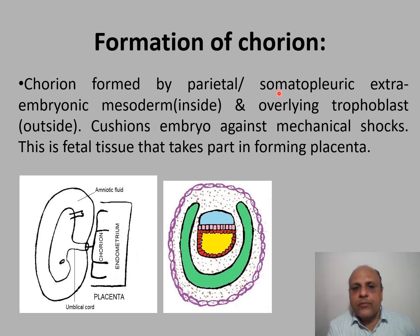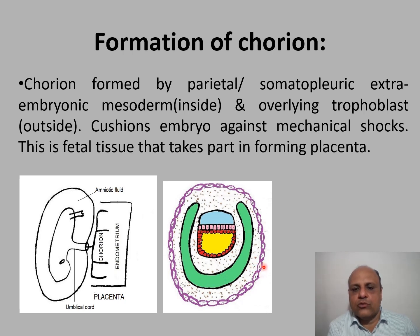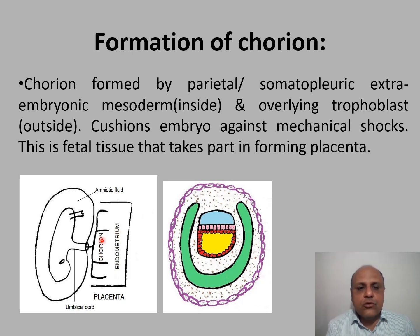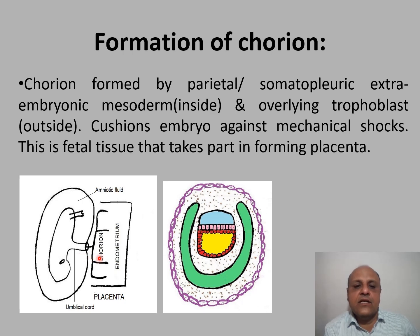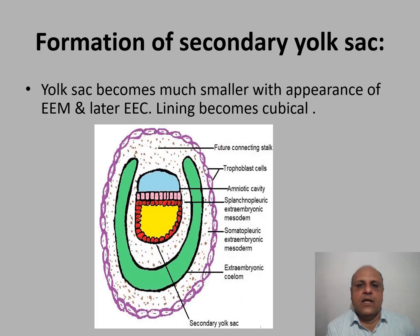The chorion is formed from the somatopleuric extra-embryonic mesoderm on the inside and the overlying trophoblast cells on the outside. The chorion cushions the embryo against mechanical shocks and is the fetal tissue that takes part in forming the placenta. The placenta is composed of chorion (fetal component) plus decidua (maternal component).